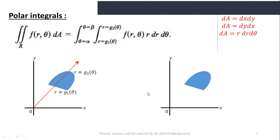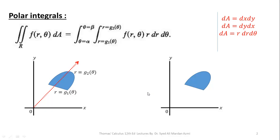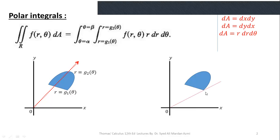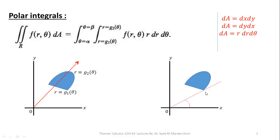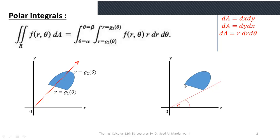For the limits of θ: since θ is our outer variable, its limits are always constant, measured as counterclockwise angles from the starting and ending points of the region with the positive x-axis. In the counterclockwise direction, our region starts at a point — I join this starting point with the origin and measure the angle, which gives us the lower limit α. Similarly, where the region ends in the counterclockwise direction, joining that point with the origin gives angle β, the upper limit of θ.